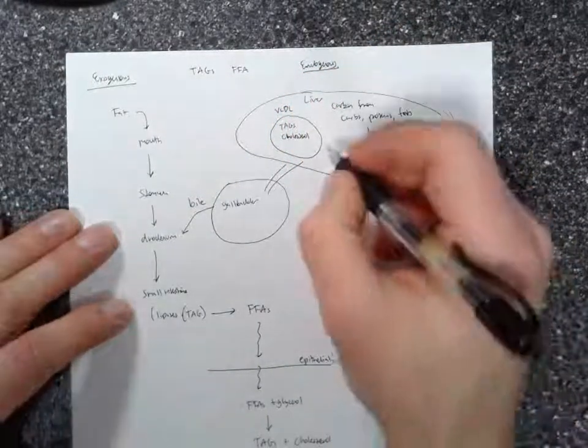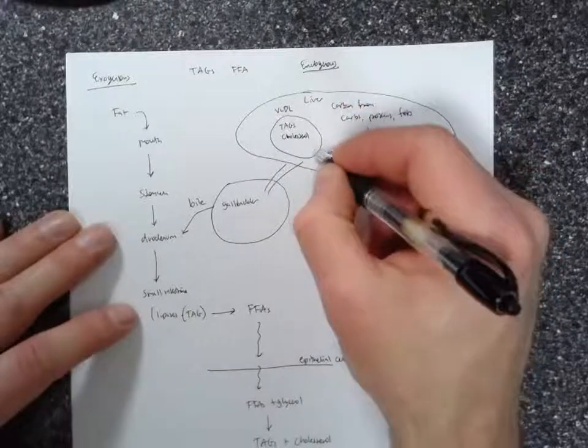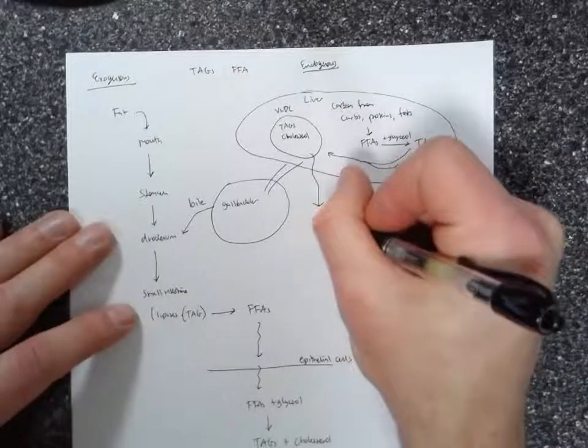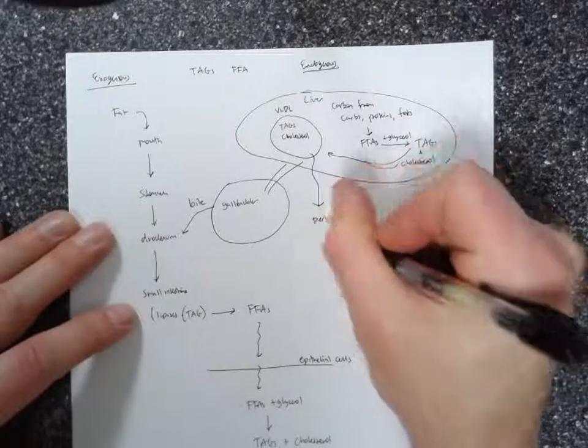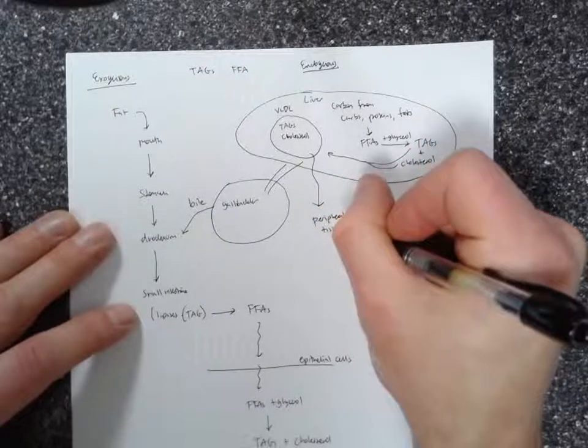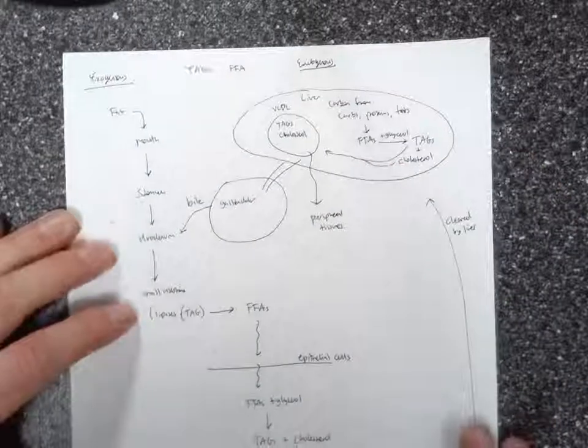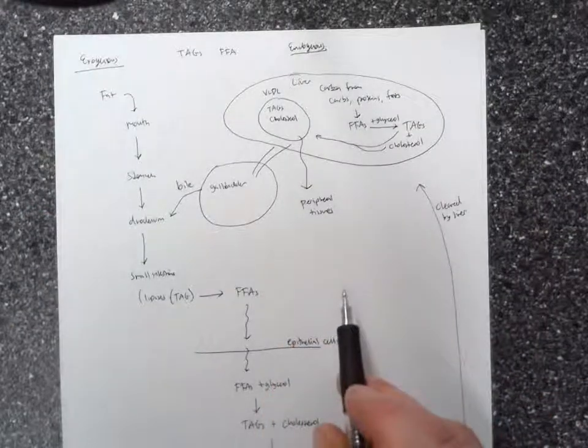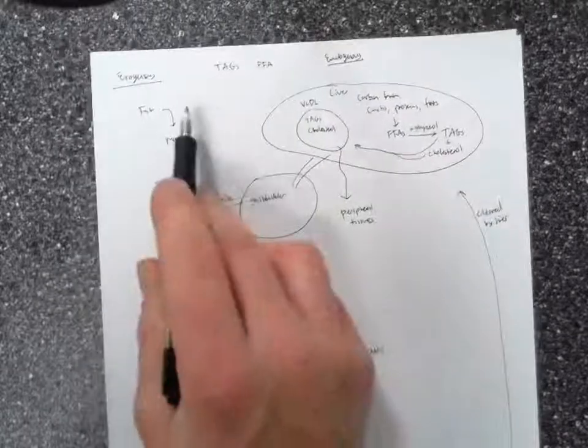And then these VLDLs are able to make their way outside of the liver to peripheral tissues where they are needed. So you can see how the peripheral tissues are going to be able to get fats, regardless of whether fats are in the diet.